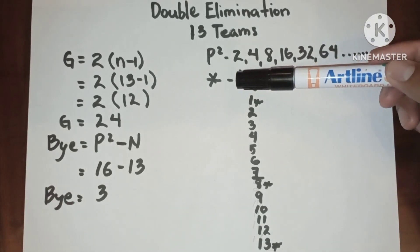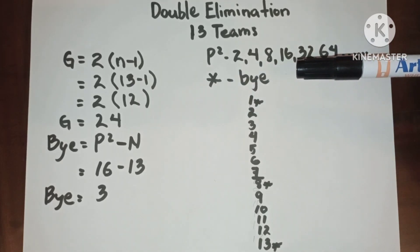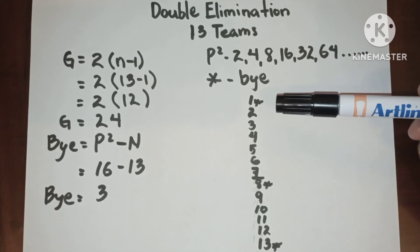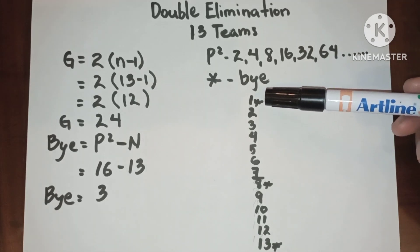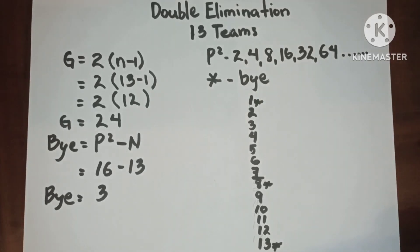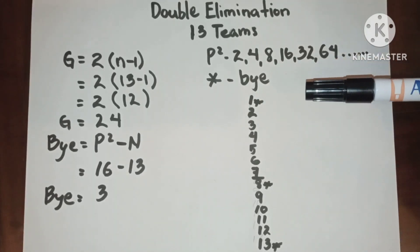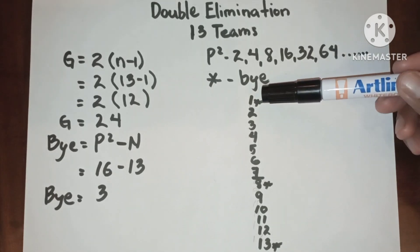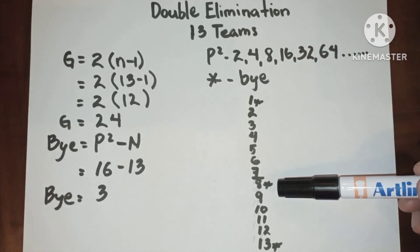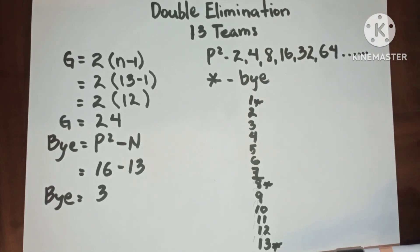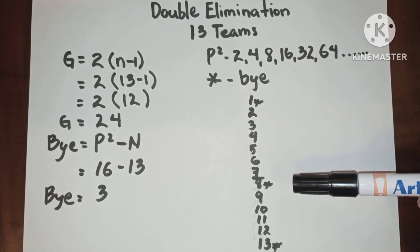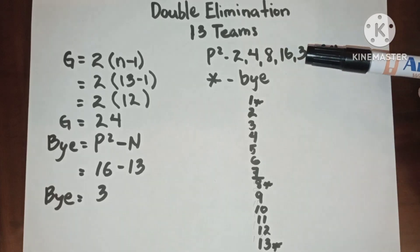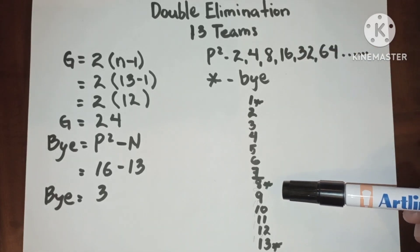Please take note that we use the asterisk to identify the bye. Remember that when writing the number of entries, it must be written vertically downward. Since we have three byes, they must be placed at positions 1, 8, and 13. We bracket it into two — between 7 and 8 — so we have 7 in the upper bracket and 6 in the lower bracket.